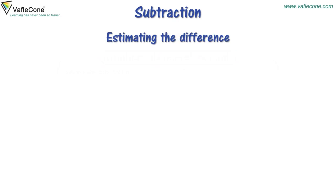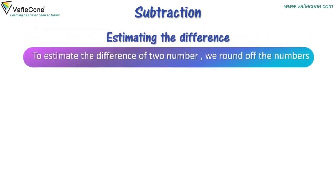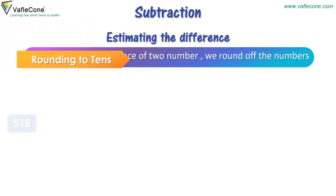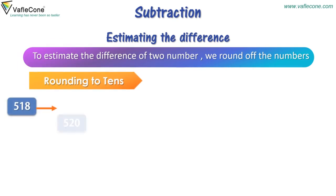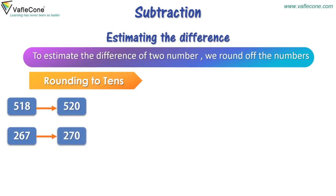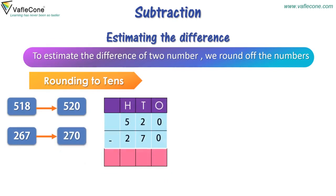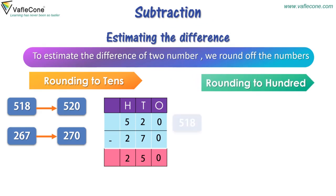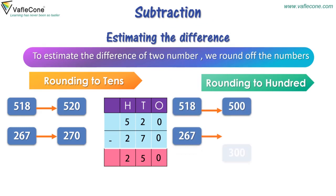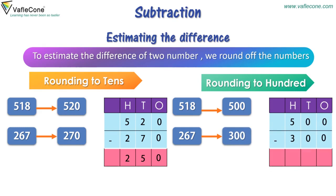Estimating the difference: to estimate the difference of 2 numbers, we round off the numbers. Rounding to 10: 518 rounded off to 520, and 267 rounded off to 270, so 520 minus 270 is equal to 250. Rounding to 100: 518 is rounded off to 500, and 267 is rounded off to 300, so 500 minus 300 is equal to 200.